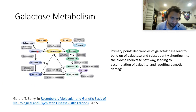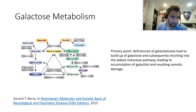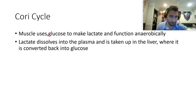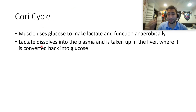In galactose metabolism, if the normal pathway is blocked, galactitol builds up and causes osmotic damage — analogous to sorbitol accumulation. Deficiency in galactose-1-uridyl transferase or galactokinase leads to galactitol buildup. The Cori cycle describes how muscle uses glucose anaerobically, producing lactate, which travels to the liver where it's converted back to glucose.